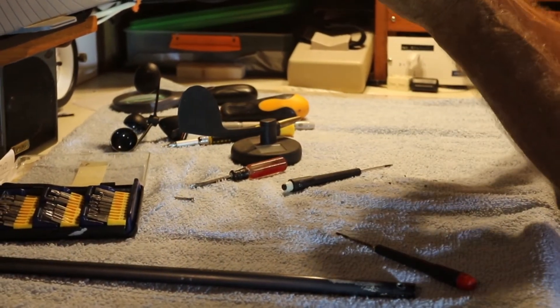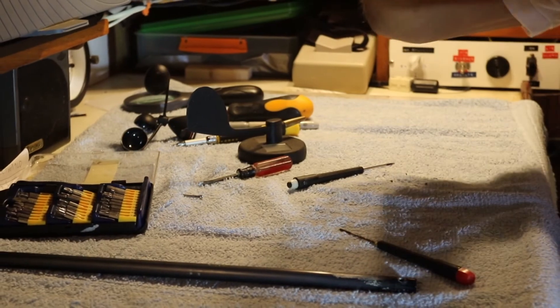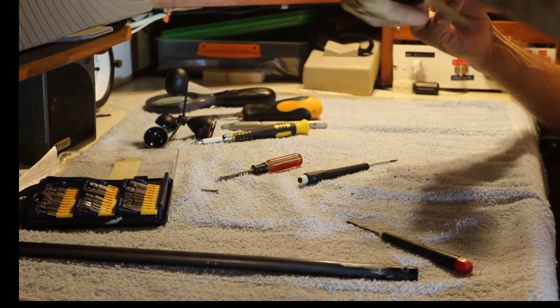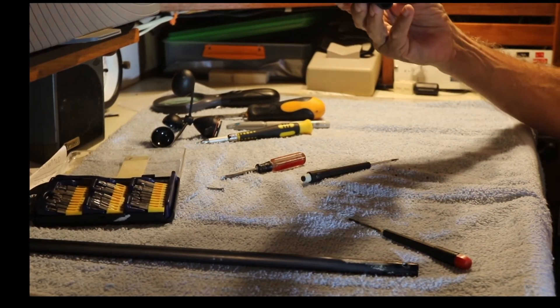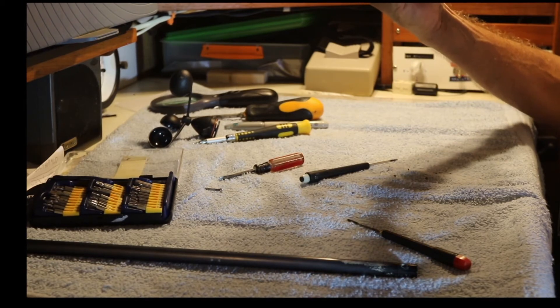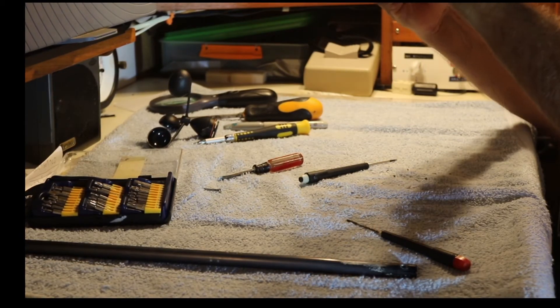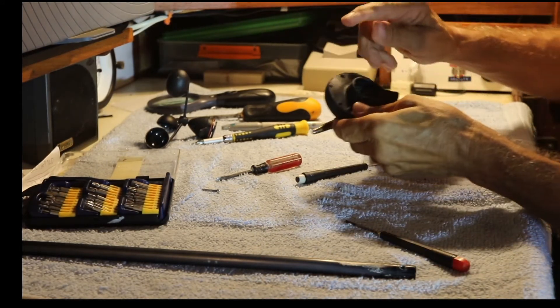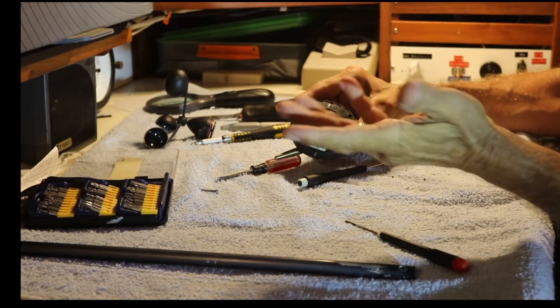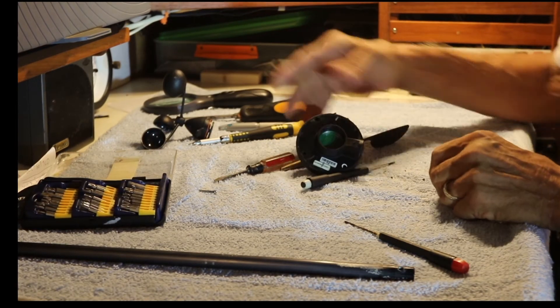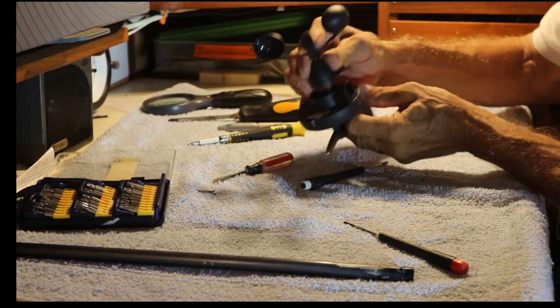And then you can snap it back together. Find all of your little marks on the bottom. One, two, and three. Okay. And snap it back together. And you put the four screws back in. And you're ready to put it back on top of the mast. After putting everything else together.